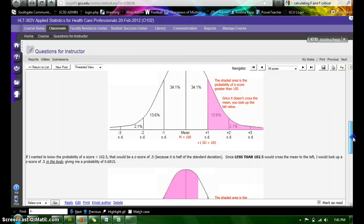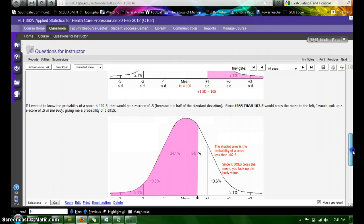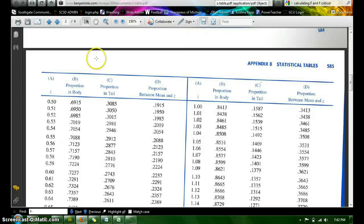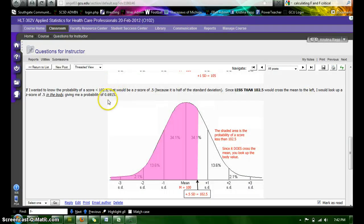I have a second example here using the same data. If I want to know the probability of a score less than 102.5, well, 102.5 was half a standard deviation, again using the formula that I showed you in the Excel sheet. I'm looking for less than that. Now this time when I shade less than 102.5, you'll notice it does cross the mean line. That means I would be looking up a body value. So I am going to look up a 0.5 Z-score in the body. So I click back to my table, and here's a Z-score of 0.5. Proportion in the body is 0.6915. So that would be the probability of a score less than 102.5.